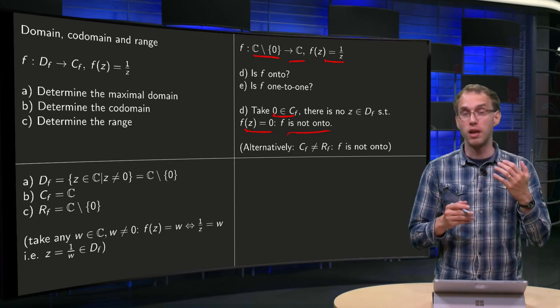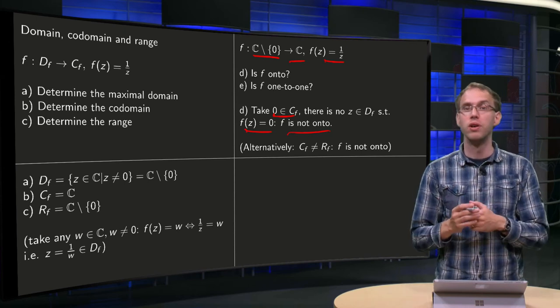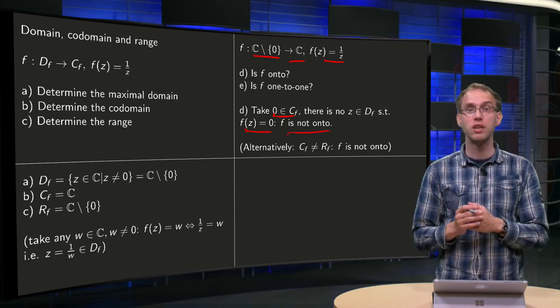Alternatively, since you already computed in parts b and c the range and the codomain, you see that they are not equal, which also leads to the conclusion that f is not onto.